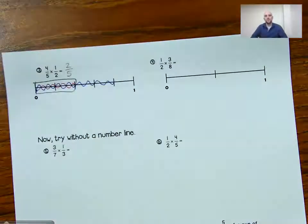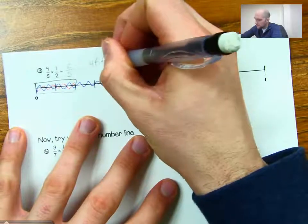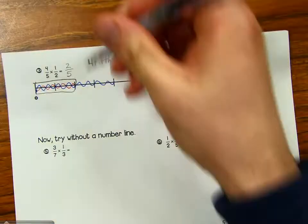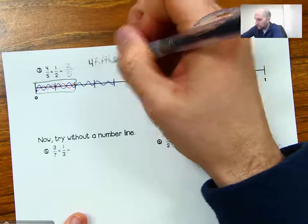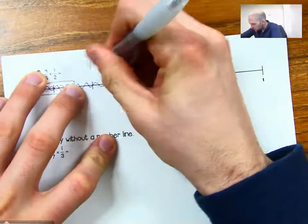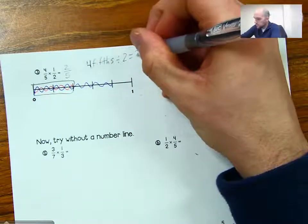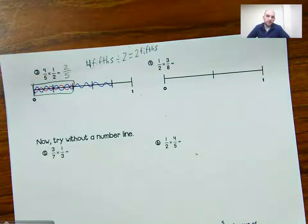If we look at that, it makes sense: four-fifths times one-half is two-fifths. One-half of four-fifths — if I think of it as four-fifths, half of four is two. So half of four-fifths, saying half is the same as dividing by two, would be two-fifths. Just another way to think about it.